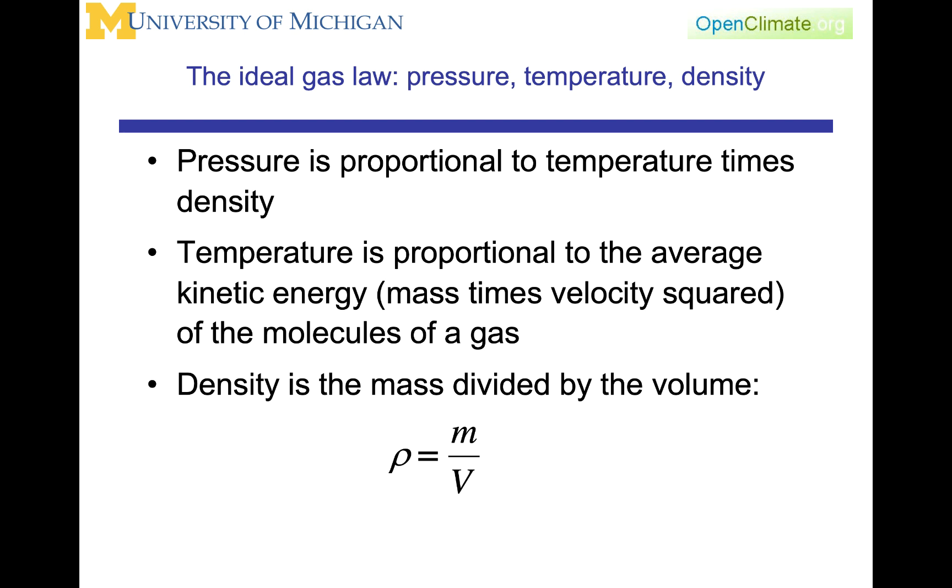Pressure is proportional to temperature times density. Proportional means there is a linear relationship with a constant relating pressure to temperature times density. Temperature is proportional to the average kinetic energy of the molecules, which relates to mass times velocity squared. Density is mass divided by volume.